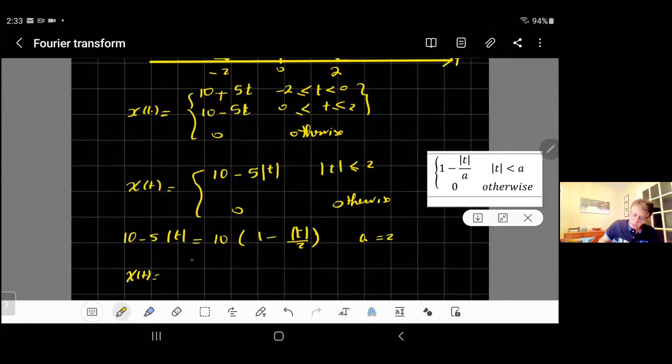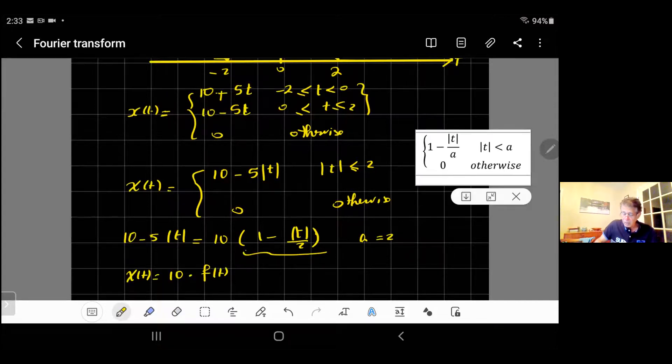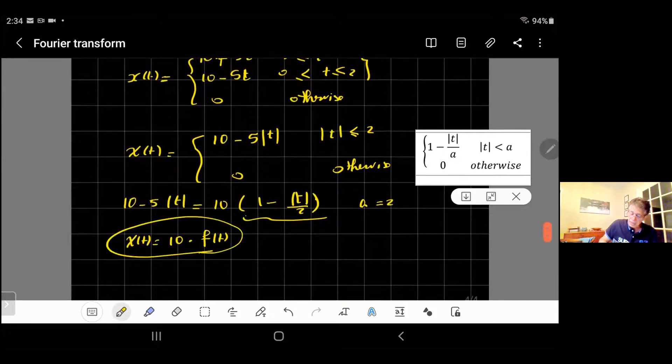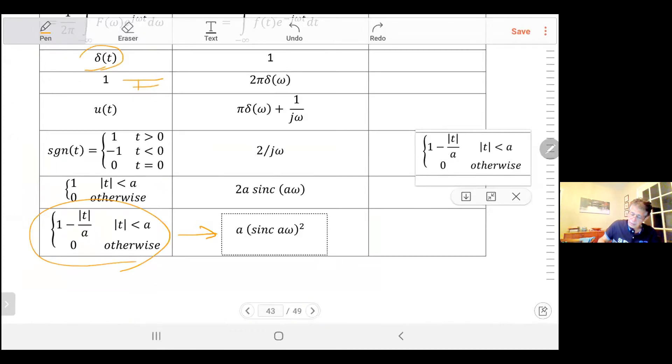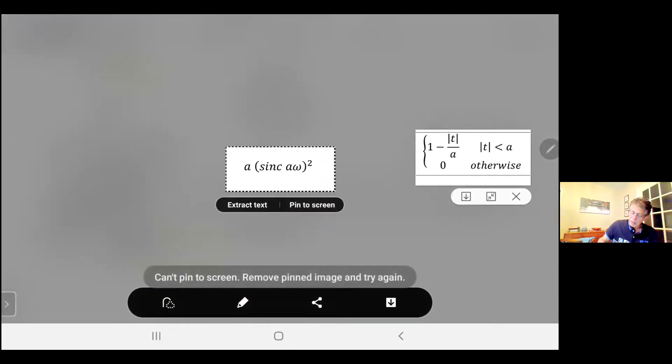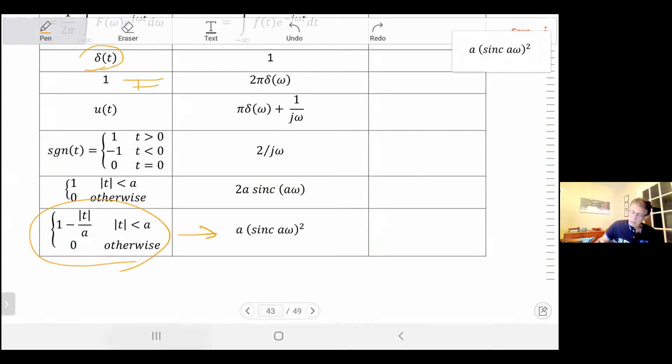So my function now x(t) will be equal to 10 times this one, which let me call it f(t). This f(t is like this one I just got from the table. But then what? It's very easy. The Fourier series of this one is given in the table. I will go to the table and show you it says there, when you have this formula, the corresponding Fourier transform.